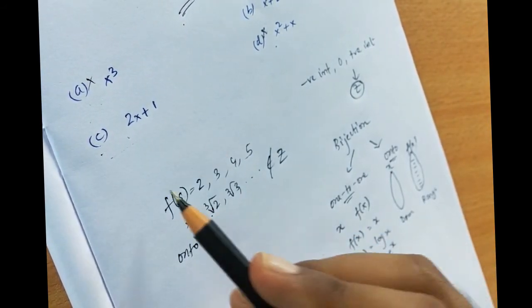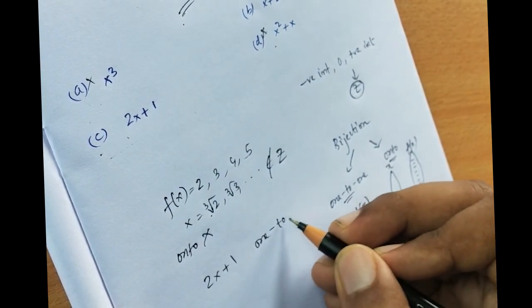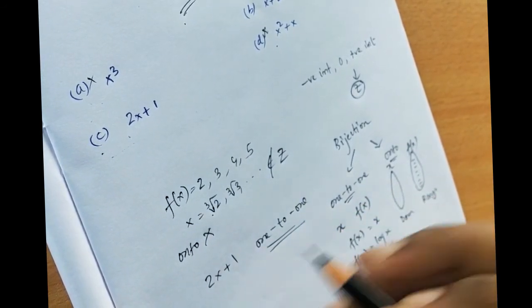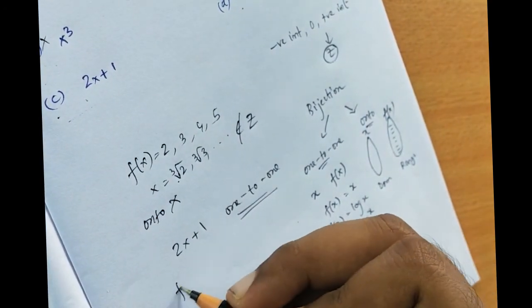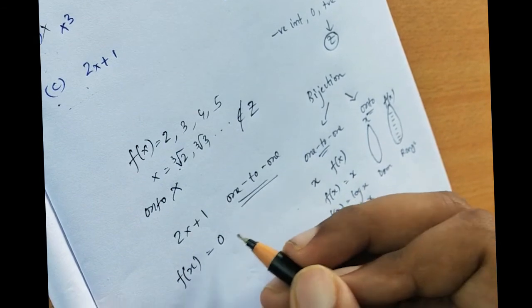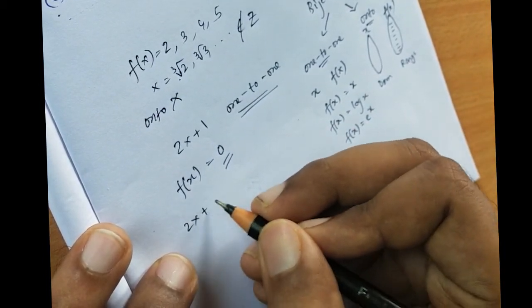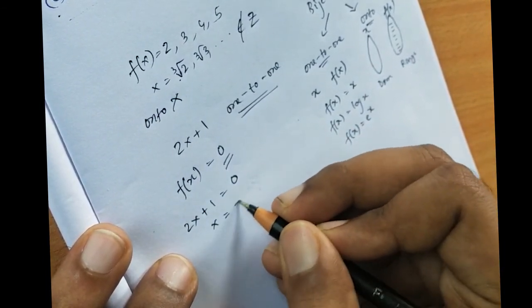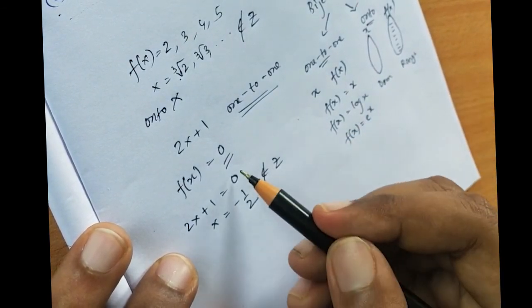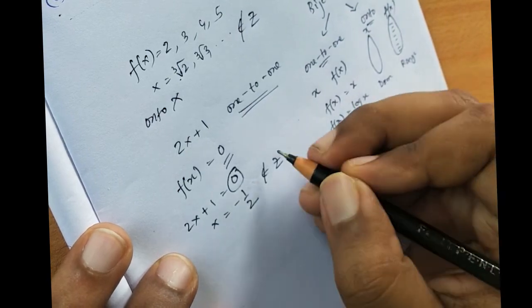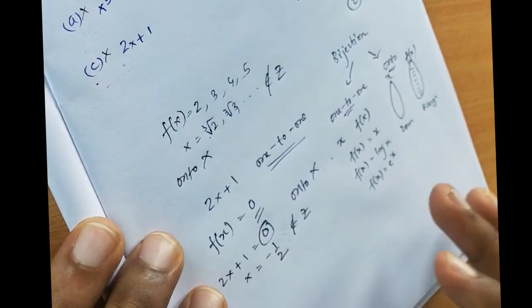2x+1 is one-to-one, but it is not onto from Z to Z. For example, f(x) = 0 gives 2x+1 = 0, so x = -1/2, which does not belong to Z. Therefore 0 is not mapped, and option C is also not correct.